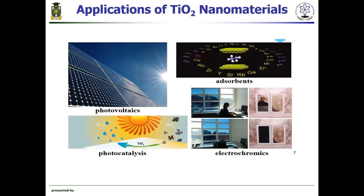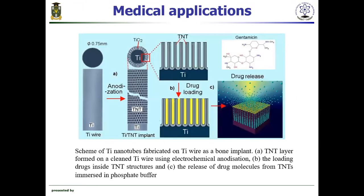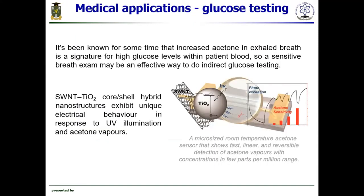Titanium dioxide has a wide range of applications, for example in photovoltaics, as an adsorbent, in photocatalysis, and electrochromics. It has also been used in medicine, namely as an implant. It has been known for some time that increased stone formation is a sensor for high glucose levels within blood, so a sensitive glucose test may be an effective way to increase glucose testing.